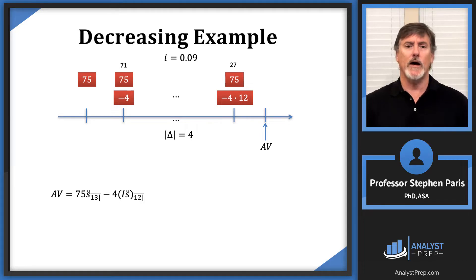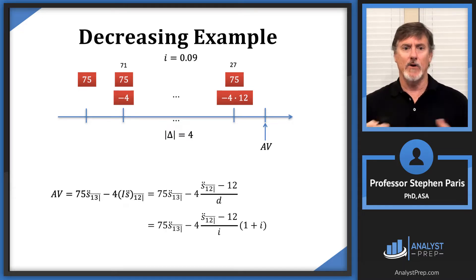But now let's go through the same process: plug in the closed-form formula for (İs̈)₁₂, and you get this. For d, instead of dividing by d, divide by i, then multiply by (1 + i). Evaluate this using a 9% i value—0.09 for i—and you'll get the exact same answer.